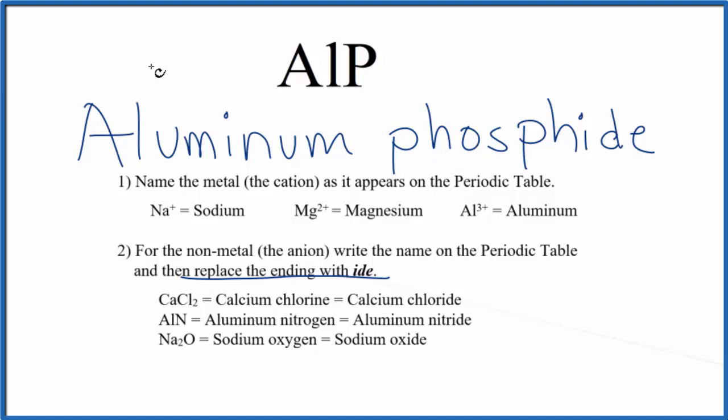Phosphorus, 3 minus. So 3 plus, 3 minus, they add up to zero. They give us a net charge of zero. So the formula for aluminum phosphide is ALP.